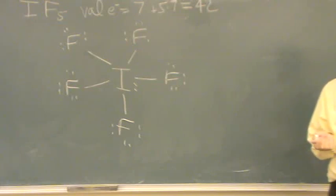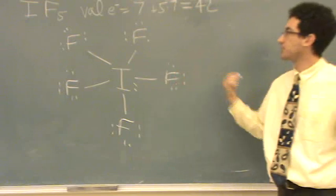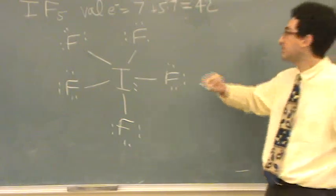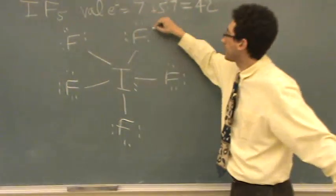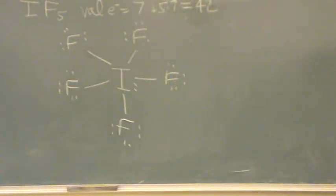Otherwise, do all the fluorines have an octet? Yeah. All the fluorines are equivalent, so what's the formal charge on the fluorines? Zero. Zero. It's in column seven, and one, two, three, four, five, six, seven. Count seven, it's in column seven, the formal charge is zero.